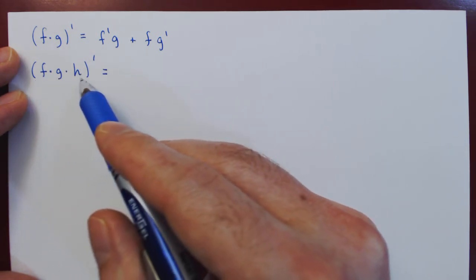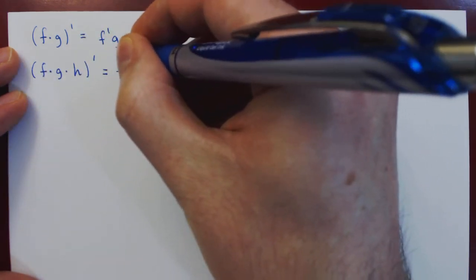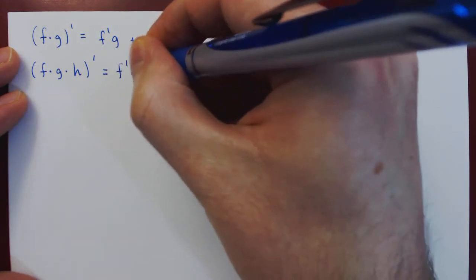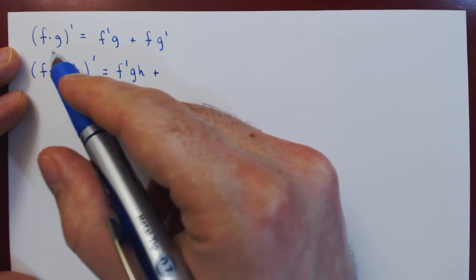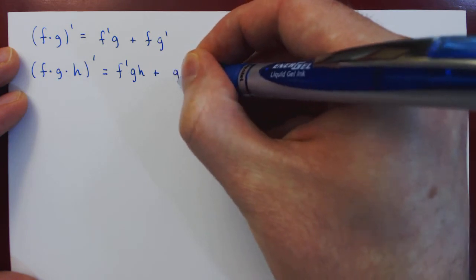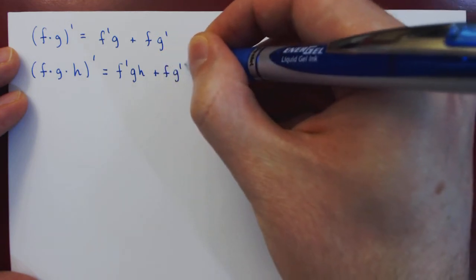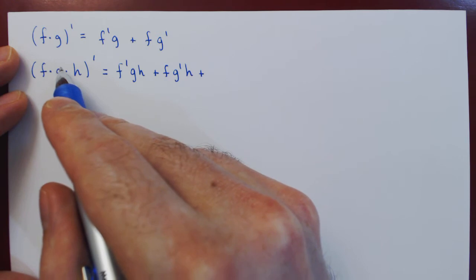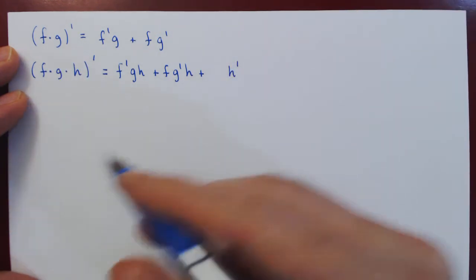It is the exact same idea applied in extended form. How do we differentiate f times g times h? Derivative of the first function, f prime, times everything else, g h, plus — now the derivative goes from f onto g — g prime times everything else, f h, plus — now the derivative jumps from g onto h — h prime times everything else, f g.